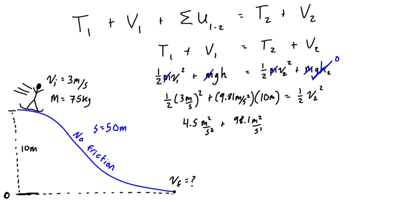Is equal to one-half v2 squared. So the left-hand side simplifies to 102.6 meters squared per second squared, which is equal to one-half v2 squared. So we can just multiply both sides by two and we'll have 205.2 meters squared per second squared.